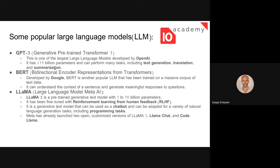Most of you know ChatGPT — it's basically a web app fine-tuned for chat using the base GPT model. You can develop a web application for chat using it. It has 175 billion parameters and there's also GPT-4, which is a paid version. We are currently using GPT-3.5. There's also BERT from Google — Bidirectional Encoder Representations from Transformers.